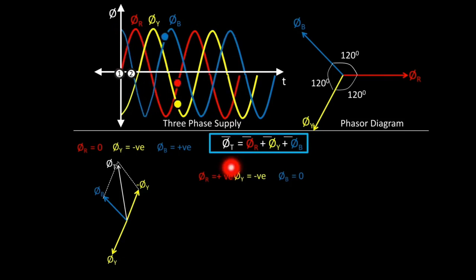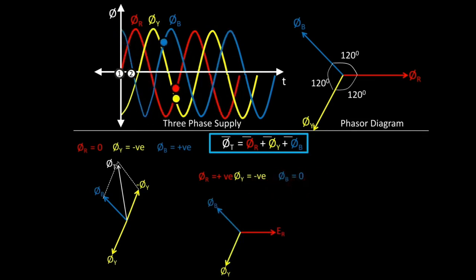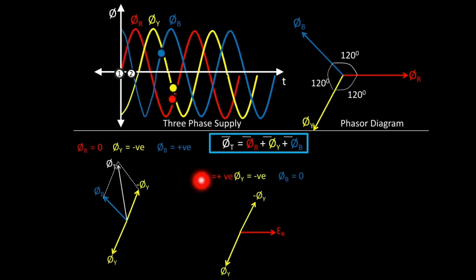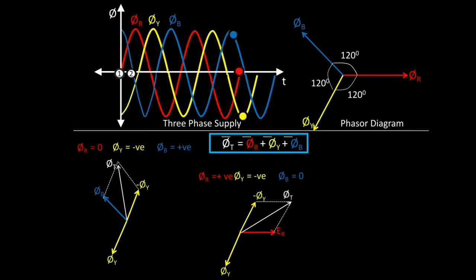We will do the addition for total flux: φR + φY + φB. Drawing the original phasors, since φB is 0 we can remove it. φY is negative, so we extend the positive phasor in the opposite direction to get −φY. Now we add φR + (−φY). Drawing the parallelogram and joining the point of intersection from the origin, we get the phasor of total flux φT for instant 2.